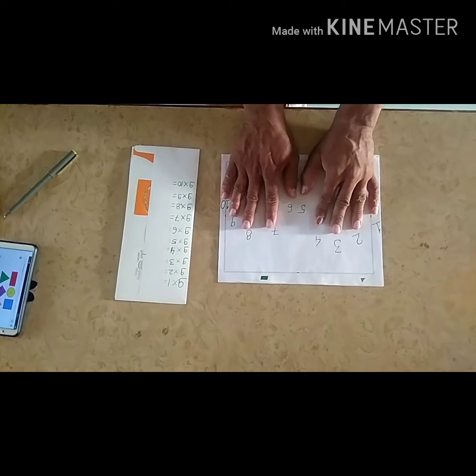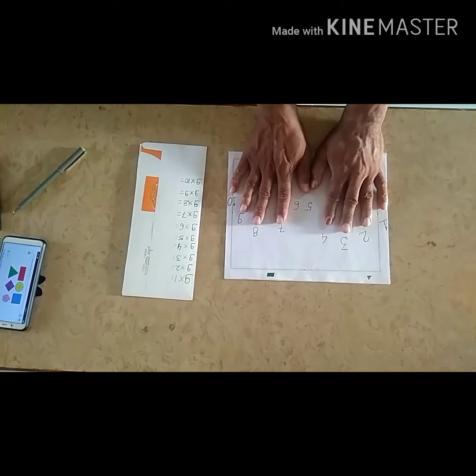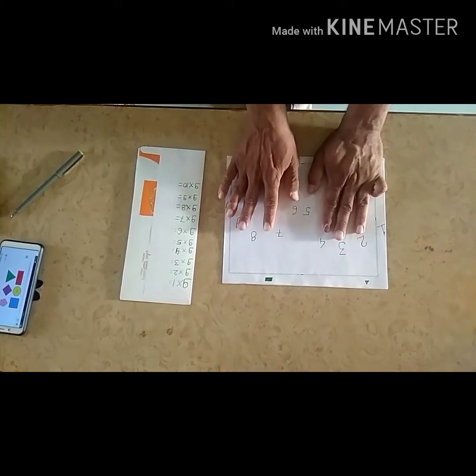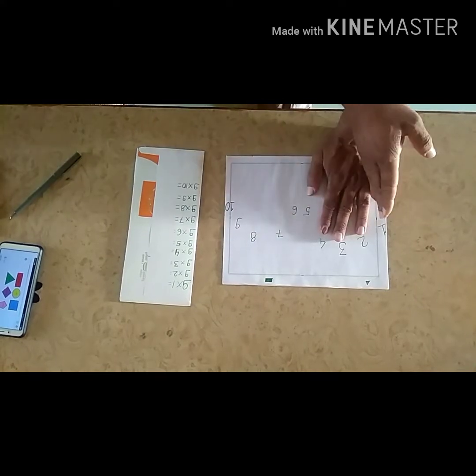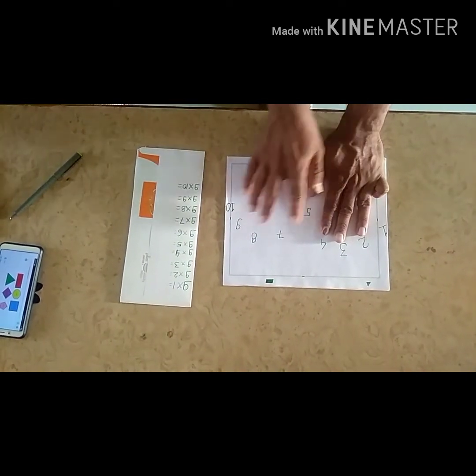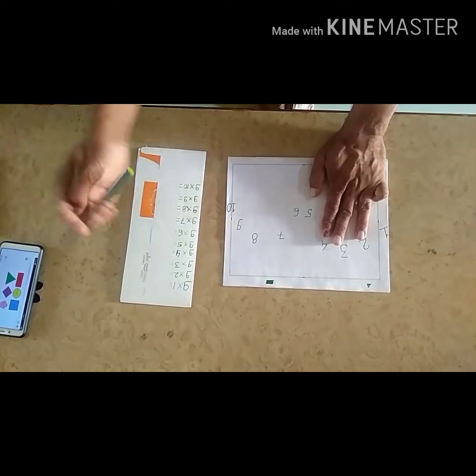We will write the table of 9. First, we will write 9 into 1. For 1, we will fold the first finger and count the fingers on the left side of that folded finger. There is no finger on the left, so we will write 0.